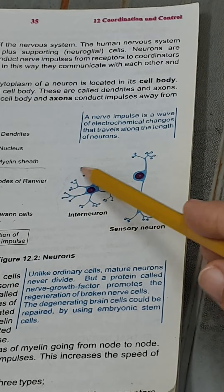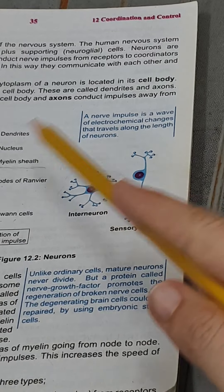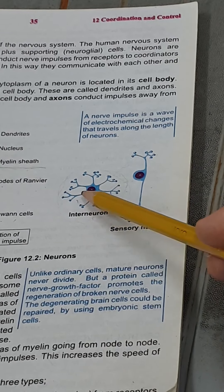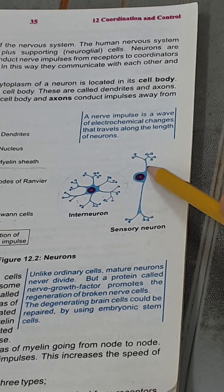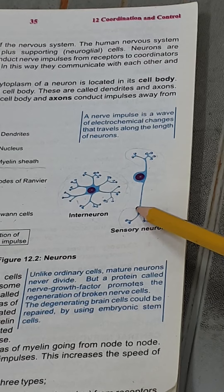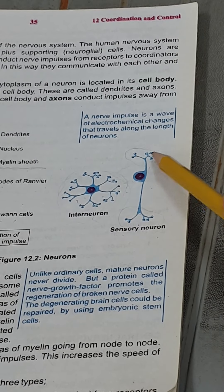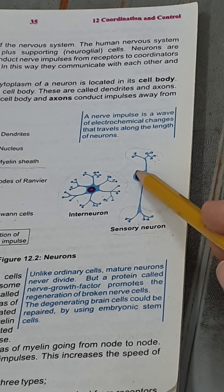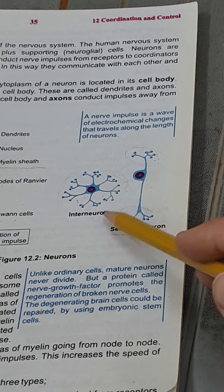The second type is the interneuron, which is present in the brain and spinal cord. It takes messages from one neuron and passes them to the next neuron within the brain and spinal cord. Interneurons have many axons and many dendrites. The third type is the sensory neuron, which has one dendrite and one axon. One end is attached to a receptor and the other end is attached to the brain and spinal cord — it takes messages from the receptor and gives them to the coordinator. The cell body of the sensory neuron is always present in the center, with an axon on one side and a dendrite on the other.